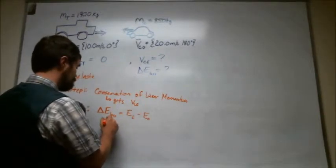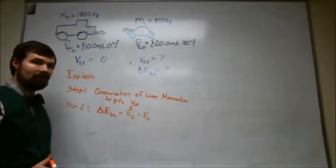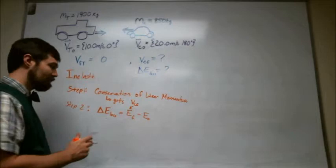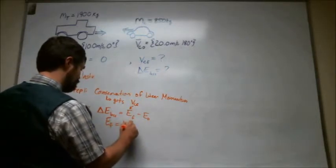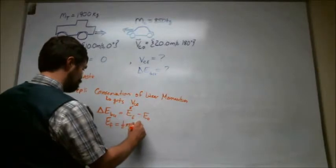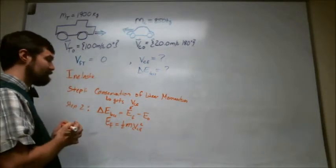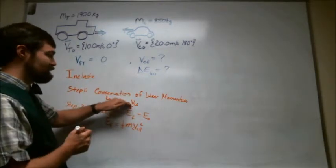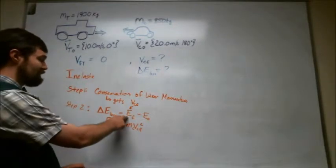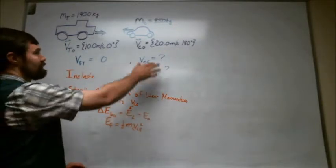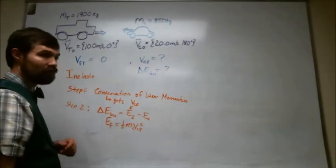This one right here then can be plugged into the final energy equation because E final is going to be one-half m v car final squared. So we have to do this step first to get the car's final speed. Then we do this step to figure out how much energy it has finally. We can plug in numbers for how much it has initially and get the total energy loss.